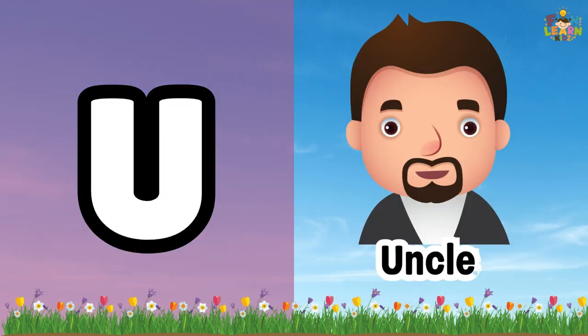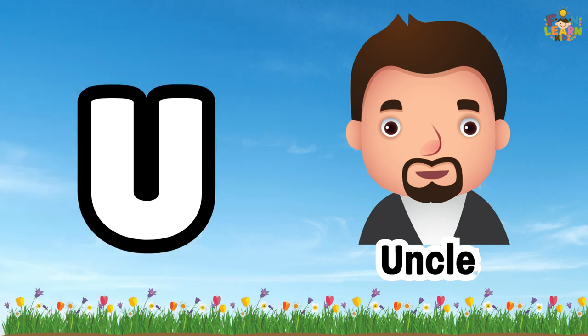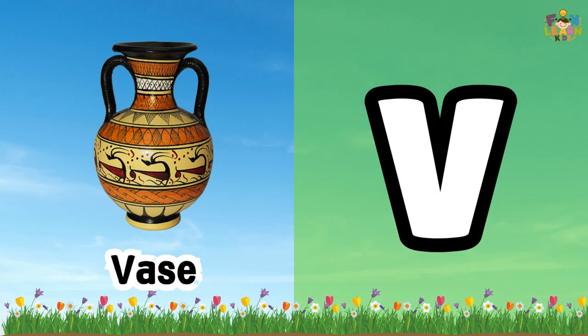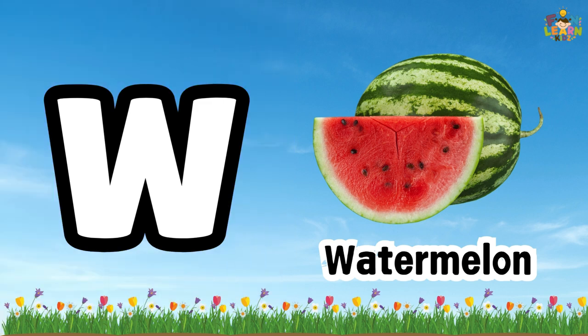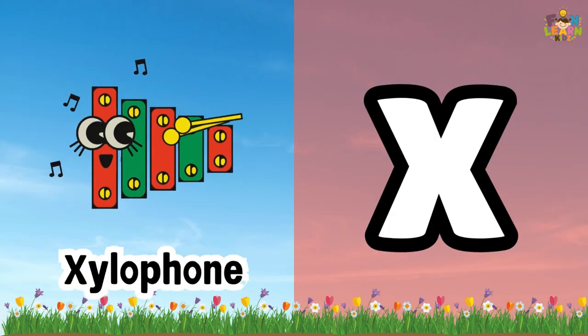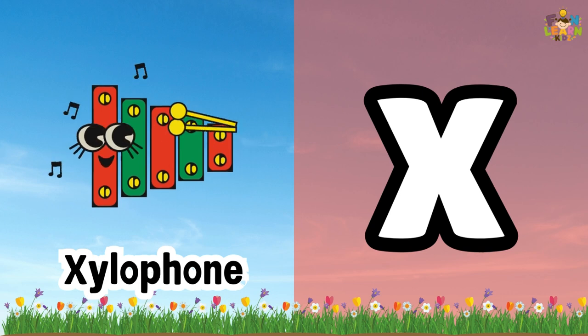U. U for uncle. V. V for vase. W. W for watermelon. X. X for xylophone.